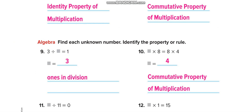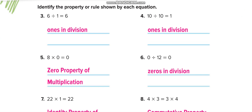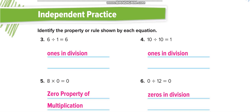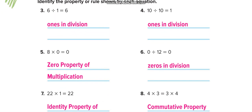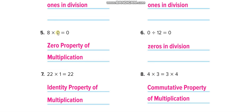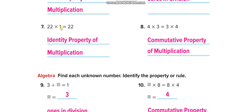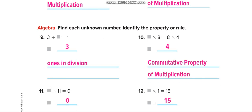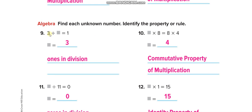Now for independent practice — I'll show you the answers and you can practice by yourself, then check. For 6 divided by 1, it's a division problem involving 1, so that's ones in division. Zero property of multiplication involves zero in multiplication, while zeros in division applies when dividing with zero.